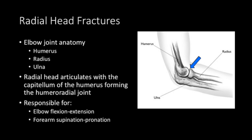The radial head articulates with the capitellum of the humerus, forming the humeroradial joint. It is responsible for elbow flexion and extension and forearm supination and pronation.